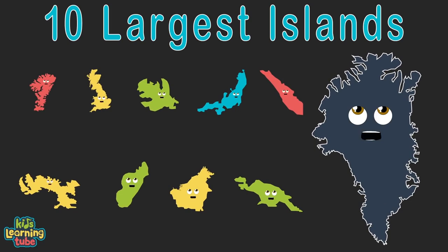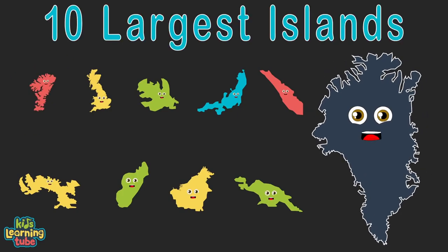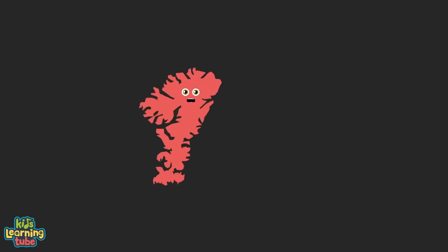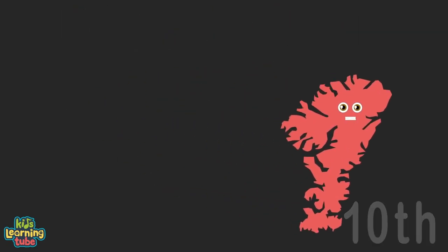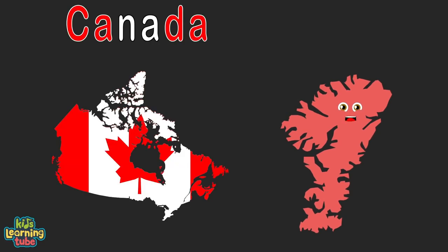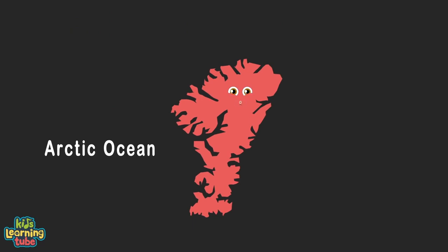We're the top 10 largest islands in the world — we're here to tell you our size, small to large, with our land area in square miles. I'm Ellesmere Island in the territory of Nunavut, located in Canada in the Arctic Ocean. My area is 75,767 square miles. I'm Great Britain, an island in the UK located in Europe, touching the North Sea and the North Atlantic, at 80,823 square miles.